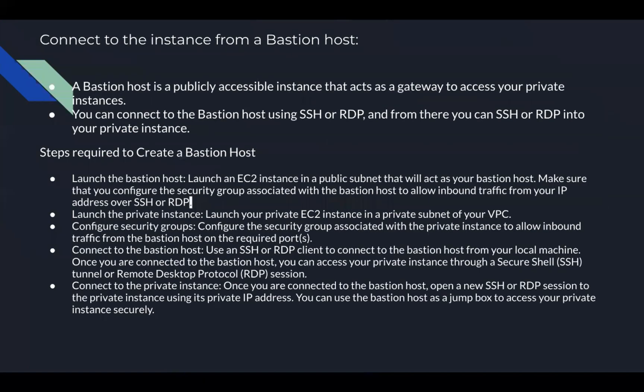Today we are going to discuss how to connect to an EC2 instance using a bastion host. Generally the bastion host is a jump server. This jump server will be created in the public subnet, and persons who want to access the private EC2 instances have to connect to the public server first, and from that public server they can access the private EC2 instances. That public server is generally called the bastion server.